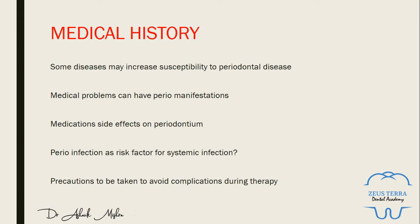You need to take a medication history because drugs have many side effects. Well-known examples include calcium channel blockers such as nifedipine, cyclosporine, and phenytoin. You also need to consider whether periodontal infection is a risk factor for systemic infection — there is emerging data showing an association between periodontal disease and medical conditions such as cardiovascular disease, stroke, diabetes, osteoporosis, and low birth weight infants.